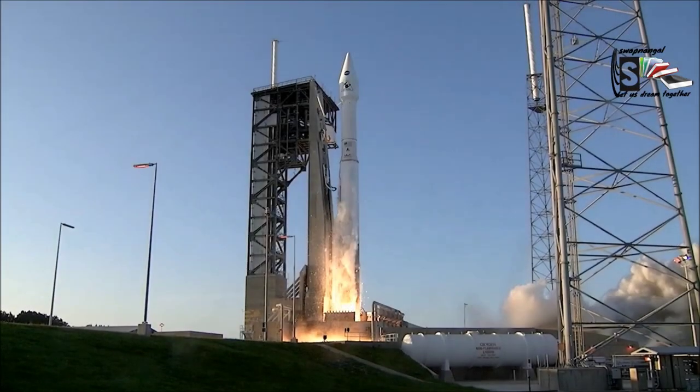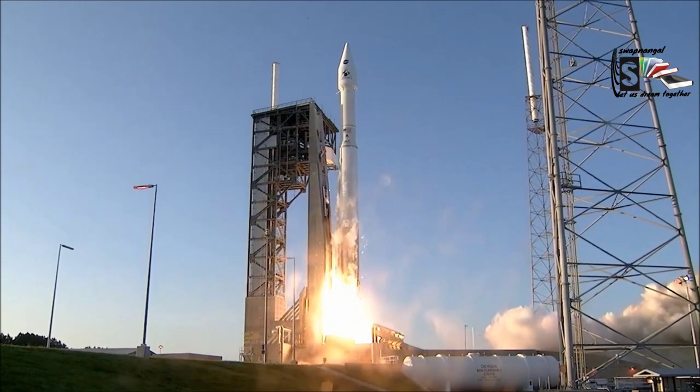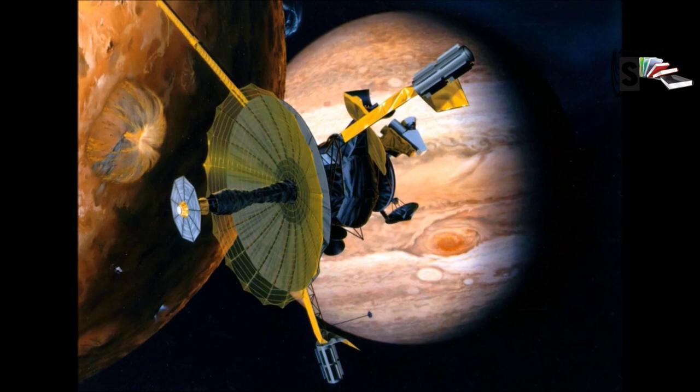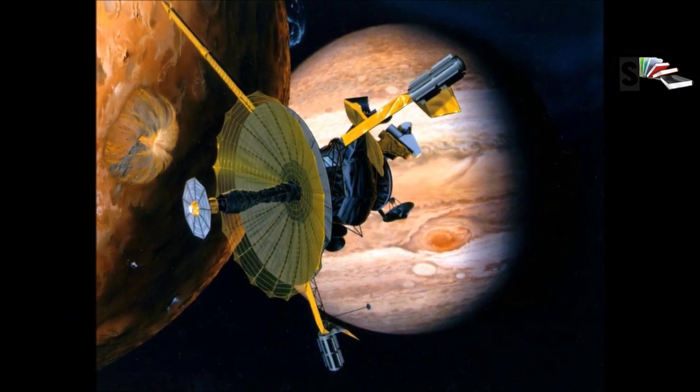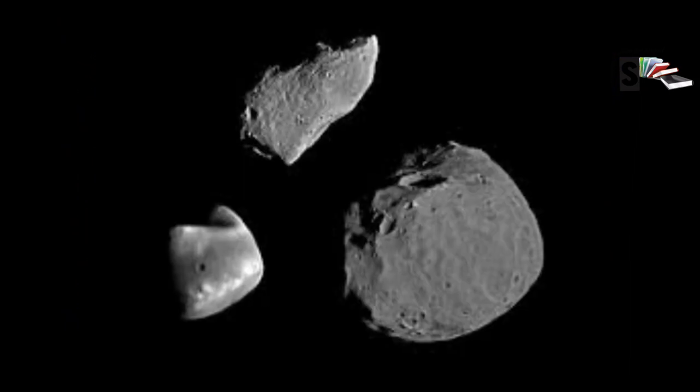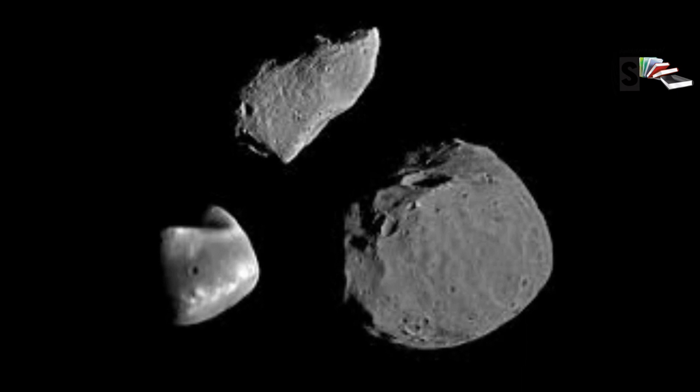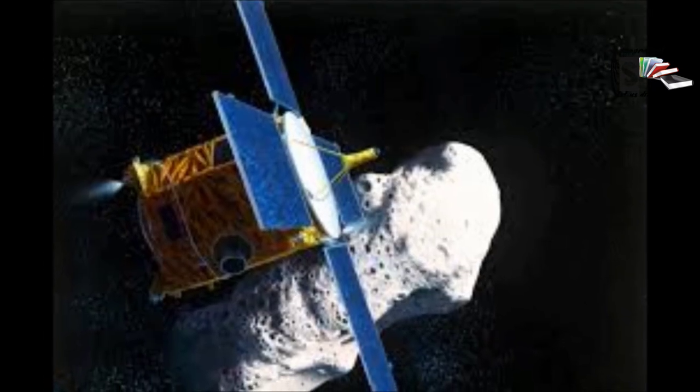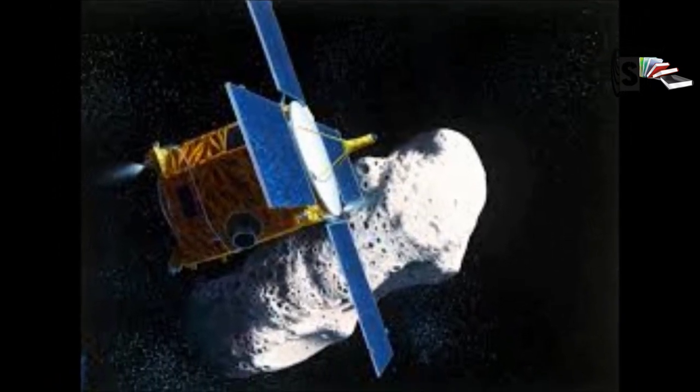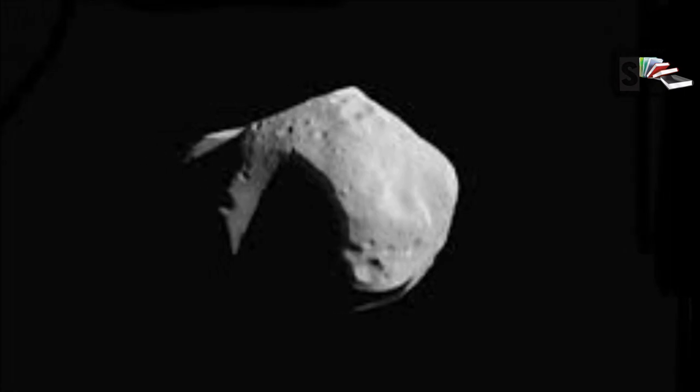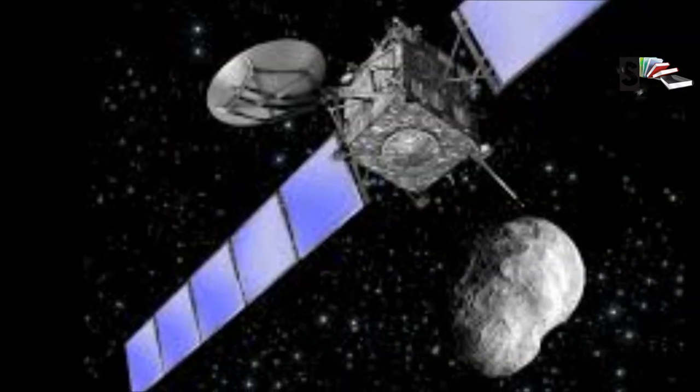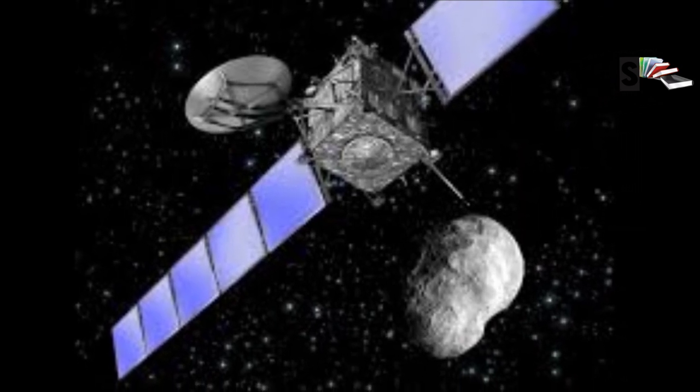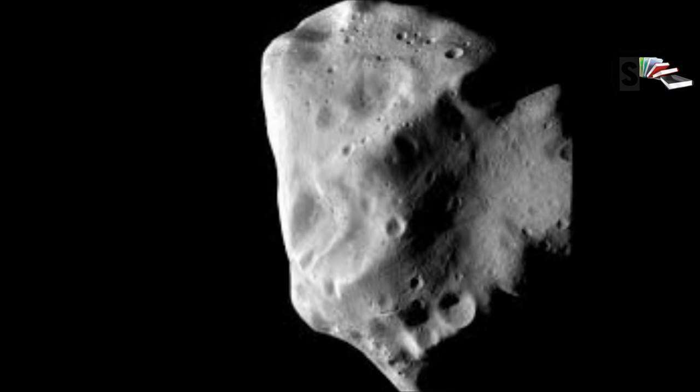These are the space missions that gave us valuable information about the asteroids. NASA's Galileo mission was the first spacecraft to fly past an asteroid. It flew past asteroid Gaspra in 1991 and Ida in 1993. NASA's near-Earth asteroid rendezvous mission studied asteroids Mathilde and Eros. The Rosetta mission encountered Steins in 2008 and Lutetia in 2010.